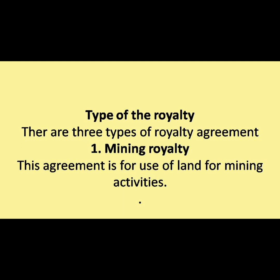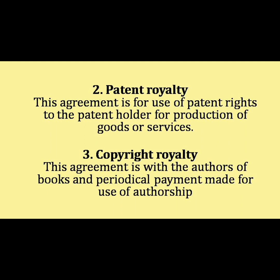Types of royalty. There are three types of royalty agreement. First one, mining royalty — this agreement is for use of land for mining activities. Second one, patent royalty — this agreement is for use of patent rights to the patent holder for production of goods or services. Third one, copyright royalty — this agreement is with the authors of books and periodical payment made for use of authorship.